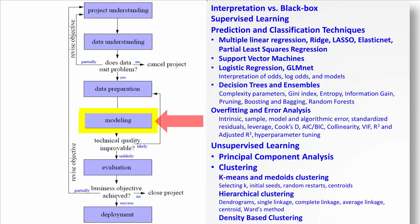Then we moved into modeling and talked about the concepts of interpretation versus predictive power. You give up some interpretability when you want to improve predictive power and vice versa. We have two major types of learning: supervised learning and unsupervised learning. In supervised learning, we talked about prediction and classification techniques, including multiple linear regression, ridge regression, lasso, elastic net, partial least squares regression, support vector machines, and logistic regression, interpreting odds and log odds. We looked at GLMnet, a penalized version of logistic regression.